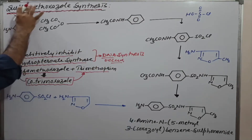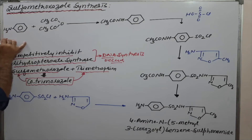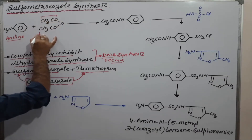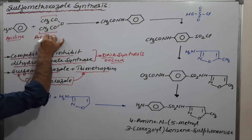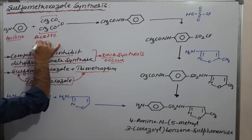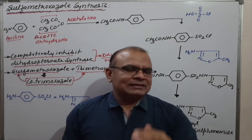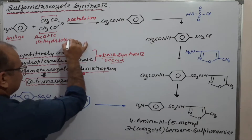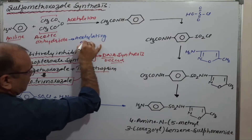In the synthesis of sulfamethoxazole, we start with the benzene ring having an amino group — that is aniline. The first reagent is acetic anhydride: when two acetyl groups are attached with an oxygen, that is acetic anhydride. Acetic anhydride acts as an acetylating agent in this reaction.